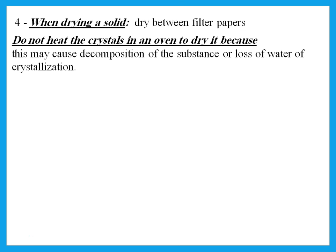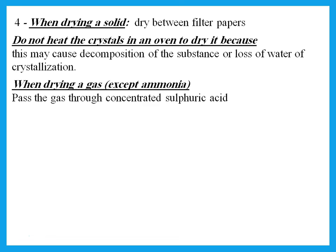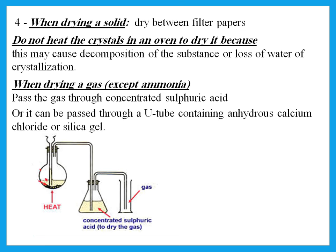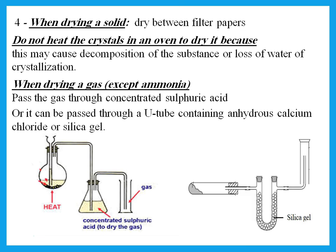When drying a gas, you can pass it through concentrated sulfuric acid. If he asks why we pass the gas through concentrated sulfuric acid, it is to dry the gas or remove water from it. However, we cannot do this for ammonia because ammonia is a base — it will react with the sulfuric acid rather than just pass through. So if I want to dry something like ammonia, I pass it through a U-tube containing silica gel or anhydrous calcium chloride. If he asks why we pass the gas through anhydrous calcium chloride or silica gel, it is to dry the gas or remove water from it.